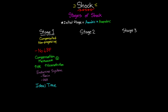Moving on to the second stage of shock, this is referred to as either the decompensated or the progressive stage of shock. At this point the body's compensation mechanisms have been working, but they can only work for so long. Now you're going to see a drop in blood pressure, and as time goes on that blood pressure will progressively get lower and lower. The body is no longer compensating and as a result your patient's condition is going to be deteriorating.